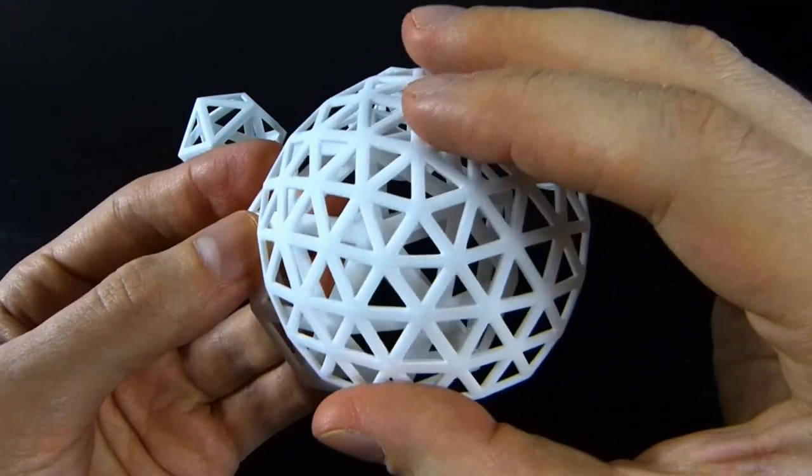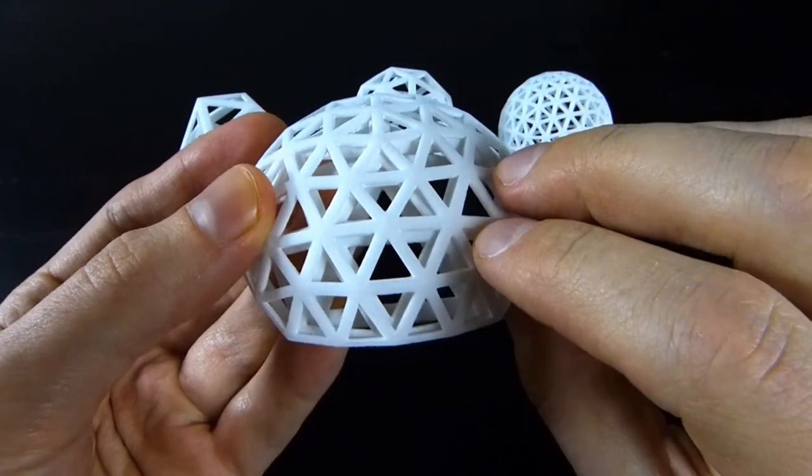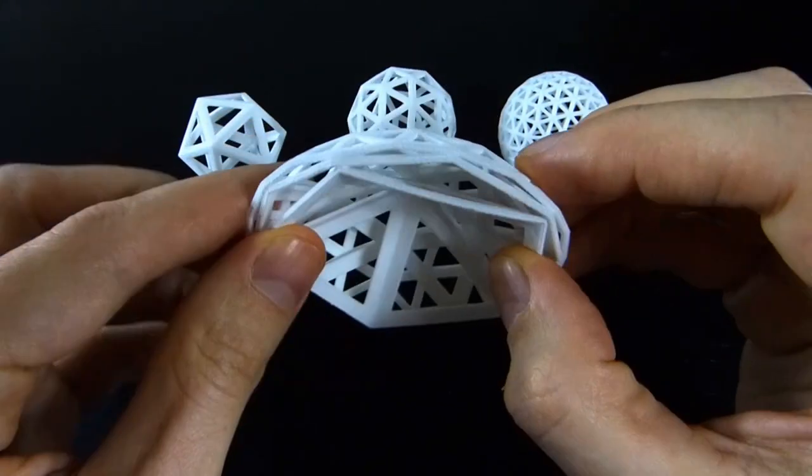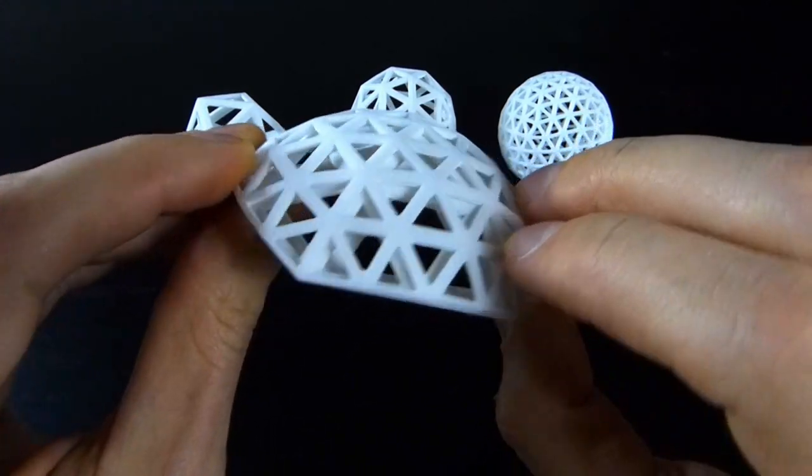And then do it again. So this guy has four triangles for each single triangle of the first subdivision, and already you're getting something that's very spherical.